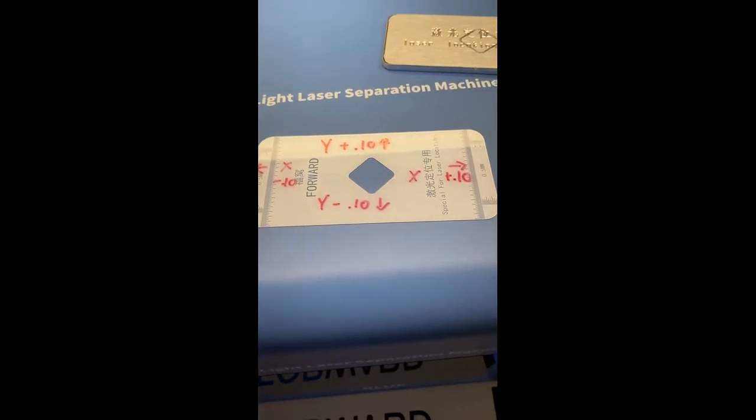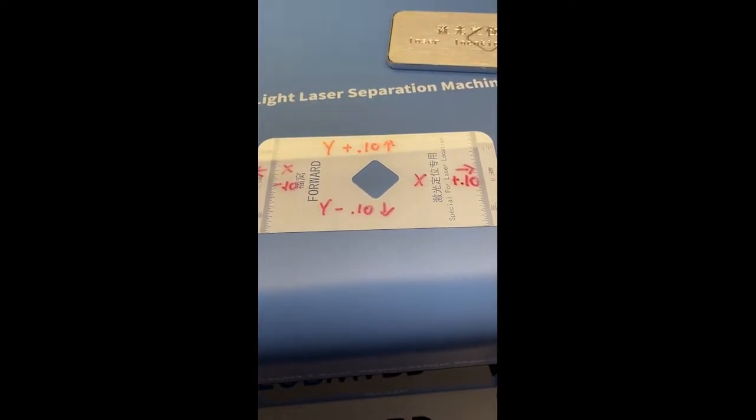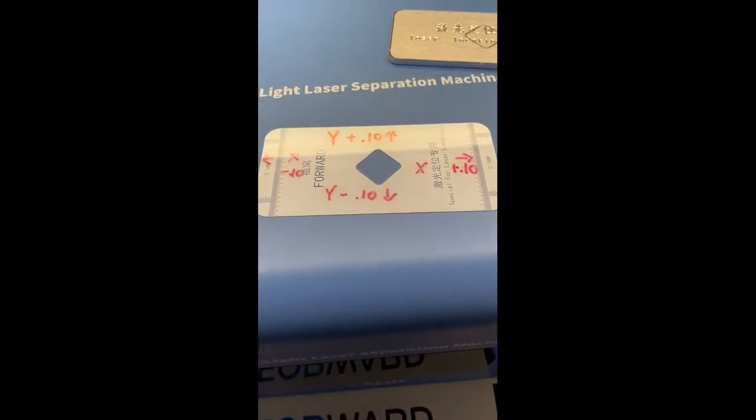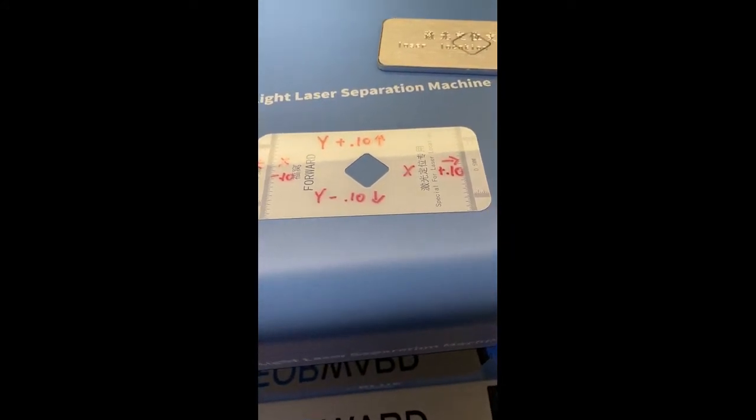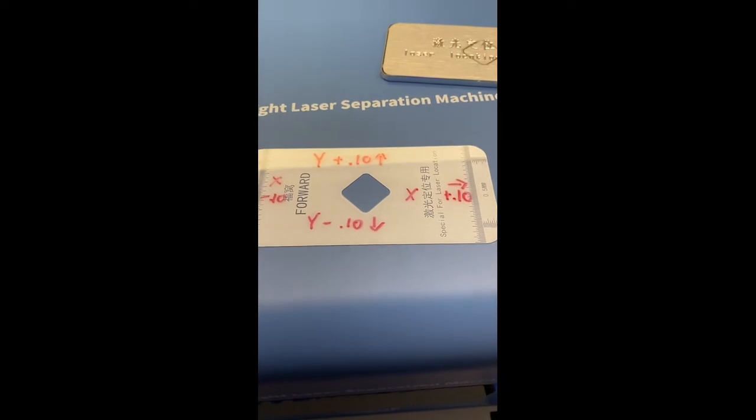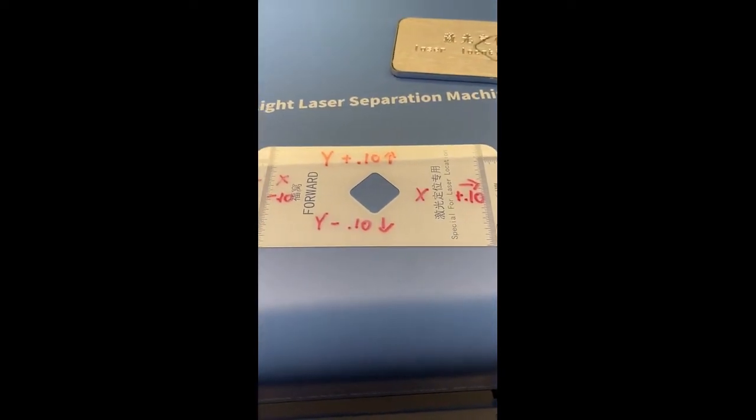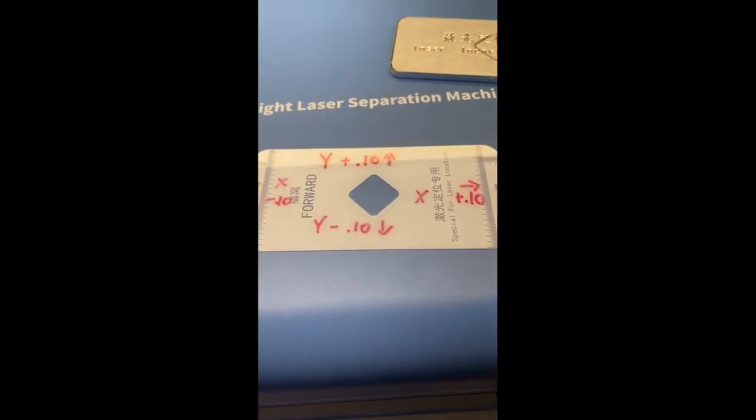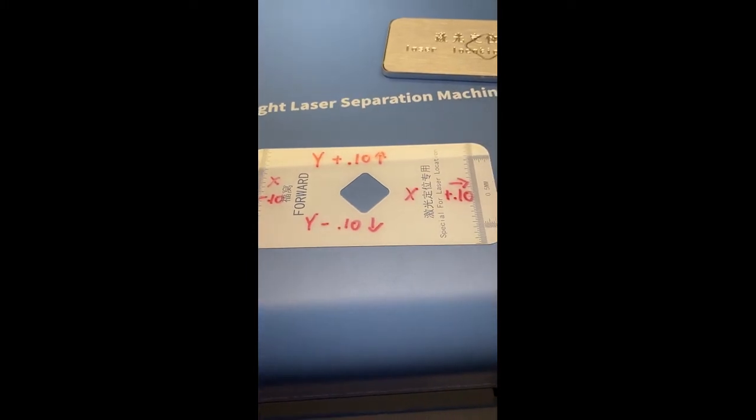It all depends on how you laser the first time. So if it looks like the pattern is shifted to the left, that means it's too far negative. So you would have to add 0.1 to your X value. Same thing goes if it's shifted up or down on the Y axis, then you would add or subtract 0.1. I'm going to go over that real quick.